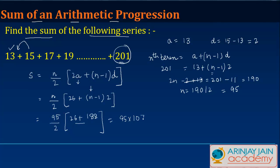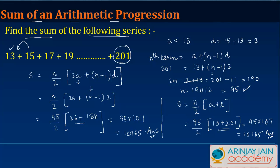The other way you could have done this is by using the second formula, where s equals n by 2 times a plus l. Once you found the value of n, you could have done 95 divided by 2, times a which is 13, plus l which is 201. That's 214 divided by 2, so you get 95 times 107, which is 10,165.